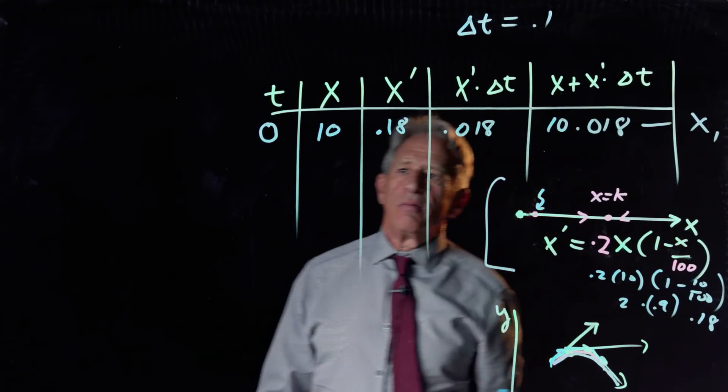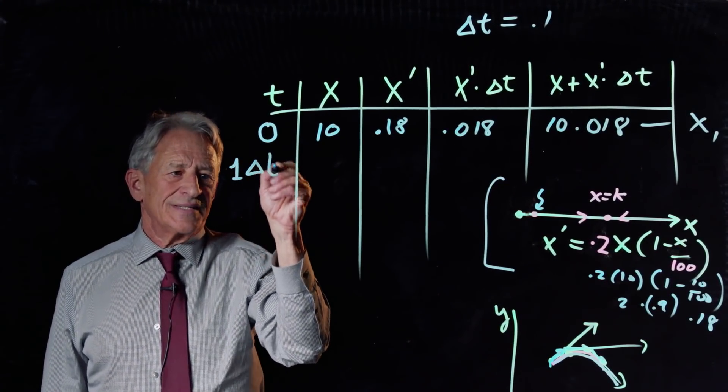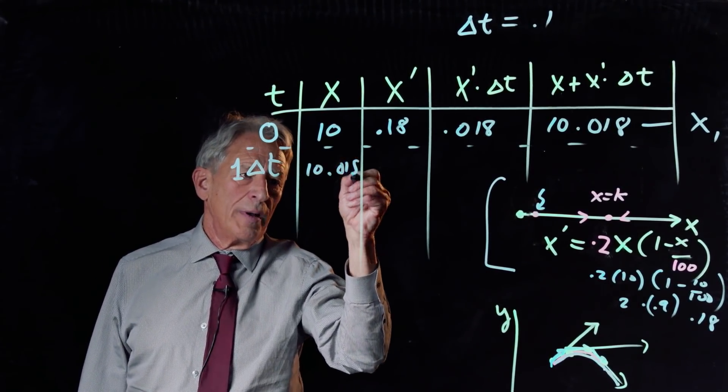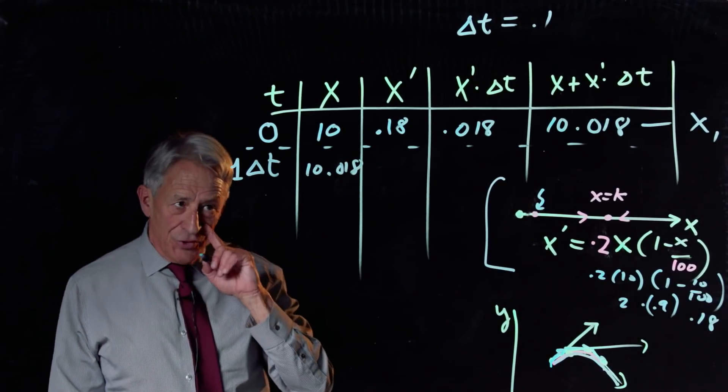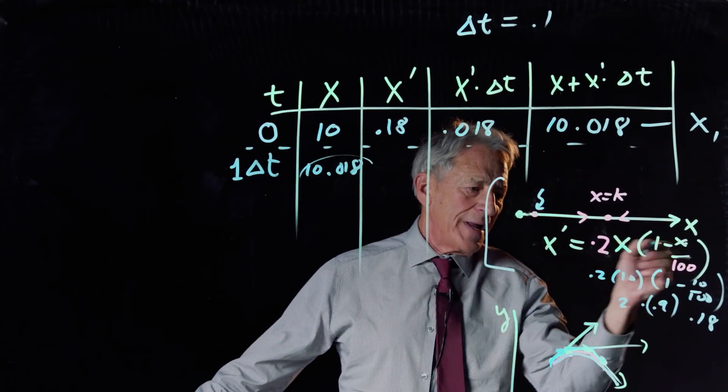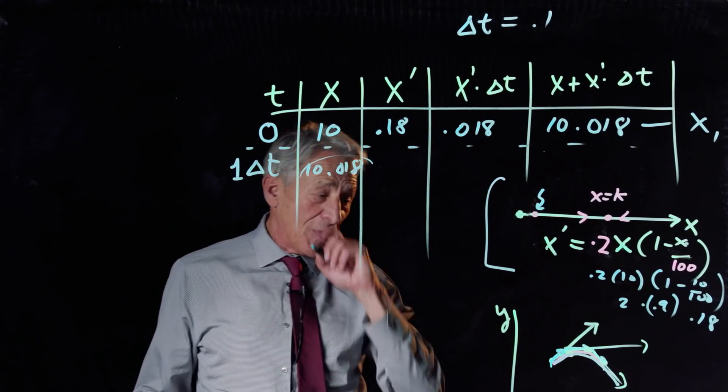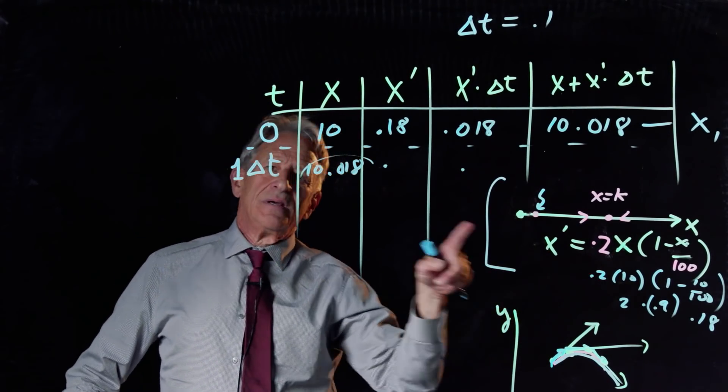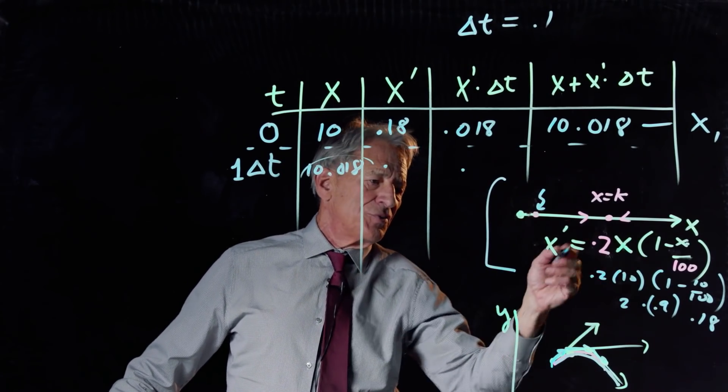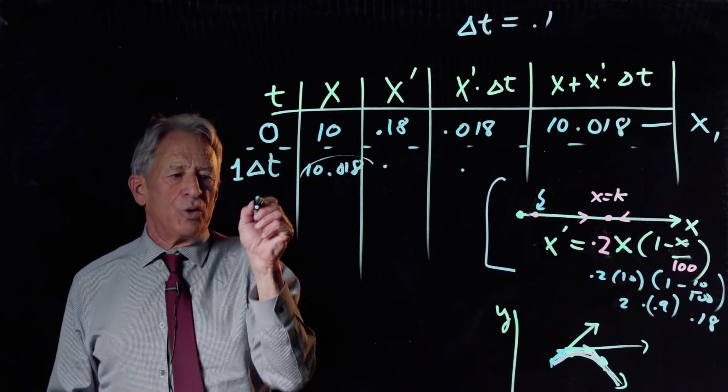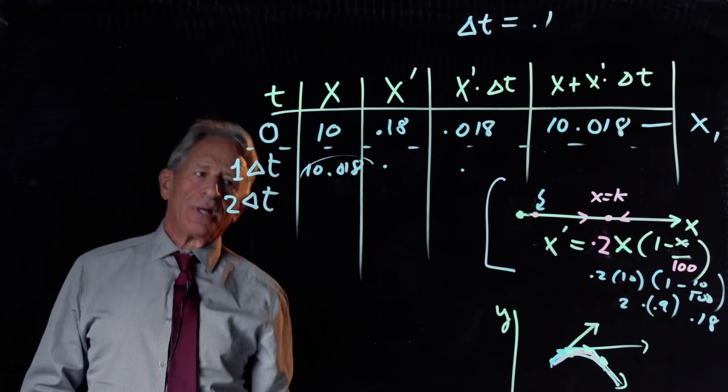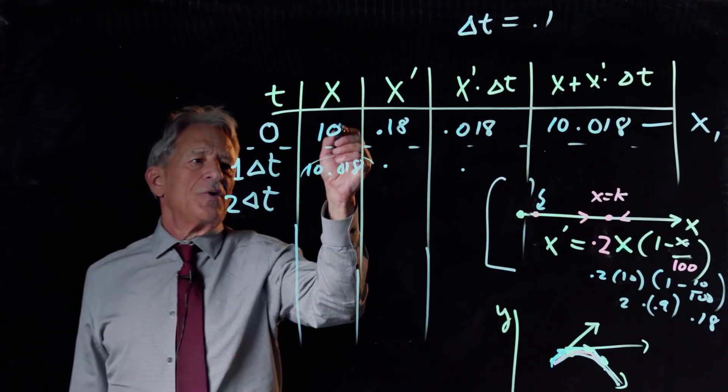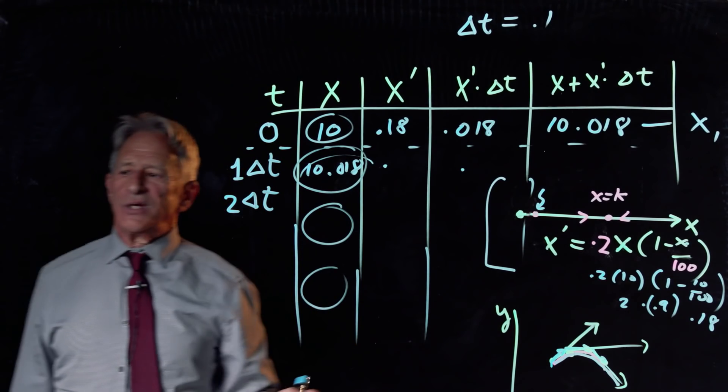And now this is X1. And so at the time 1 delta T, we now have our new X value. Our new X value is 10.018. Now what I have to do is I have to take 10.018, plug it in for X in the change equation, and get a new value of X prime. And I certainly cannot do that in my head standing here. So you will just have to imagine that I have successfully plugged X equals 10.018 into the change equation, gotten the new change vector, and then pulled it down here. And that is the new change at the time 2 delta T. And in that way, we generate a sequence of states. And these X's are the successive points that determine Euler's approximation to the red curve.